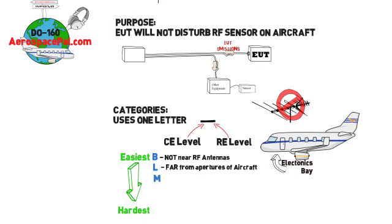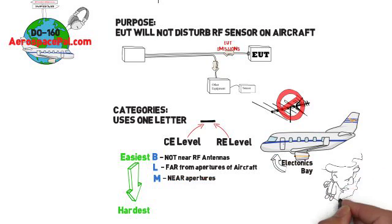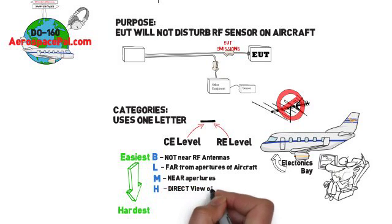M - this is for equipment that may be near apertures of the aircraft but not in direct view of RF antennas. For example, the cabin or cockpit. H - has a direct view of the RF antennas usually on the outside of the aircraft.